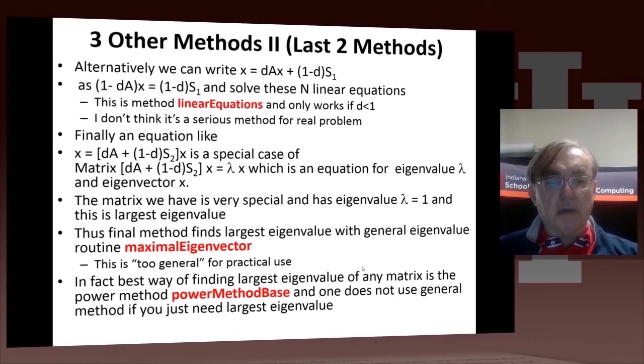Then we note that actually there's... we can go back to the original form of the equation. x equals d times a plus 1 minus ds2, times x. So that's actually an eigenvector equation, where x is an eigenvalue. And actually, we can show the eigenvalue as 1, and also that this is the largest eigenvalue.